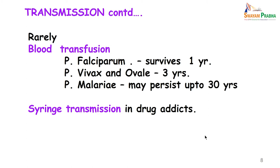Transmission besides occurring by the vector can also rarely be transmitted by blood transfusion and by syringe transmission in drug addicts. In a person suffering from Plasmodium falciparum infection, the parasite can survive for up to 1 year in the body. For P. vivax and ovale it can survive for 3 years, and for P. malariae it may persist up to 30 years.